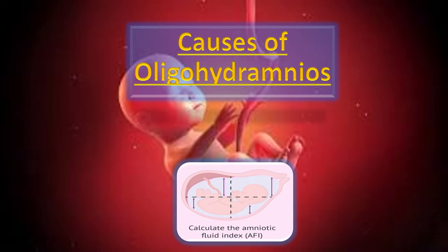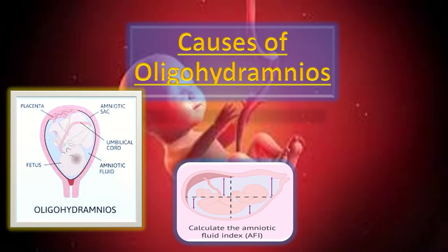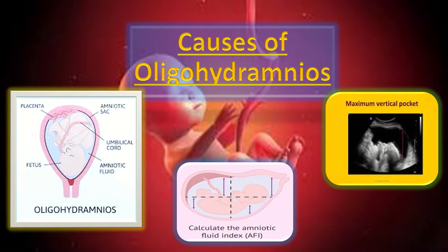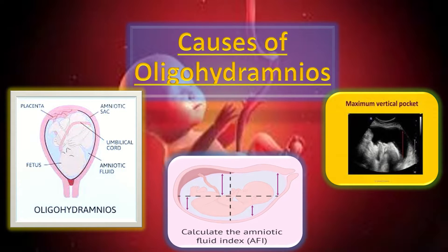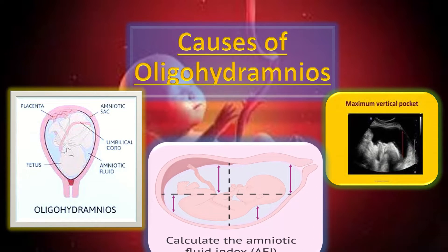Today we will talk about the causes of oligohydramnios. Oligohydramnios is a condition in which there is a decreased amount of amniotic fluid or liquor around the baby. Quantitatively on ultrasound, oligohydramnios may be defined as a maximum vertical pool of less than 2 cm, an amniotic fluid index of less than 5 cm, or an AFI below the 5th centile for gestational age.